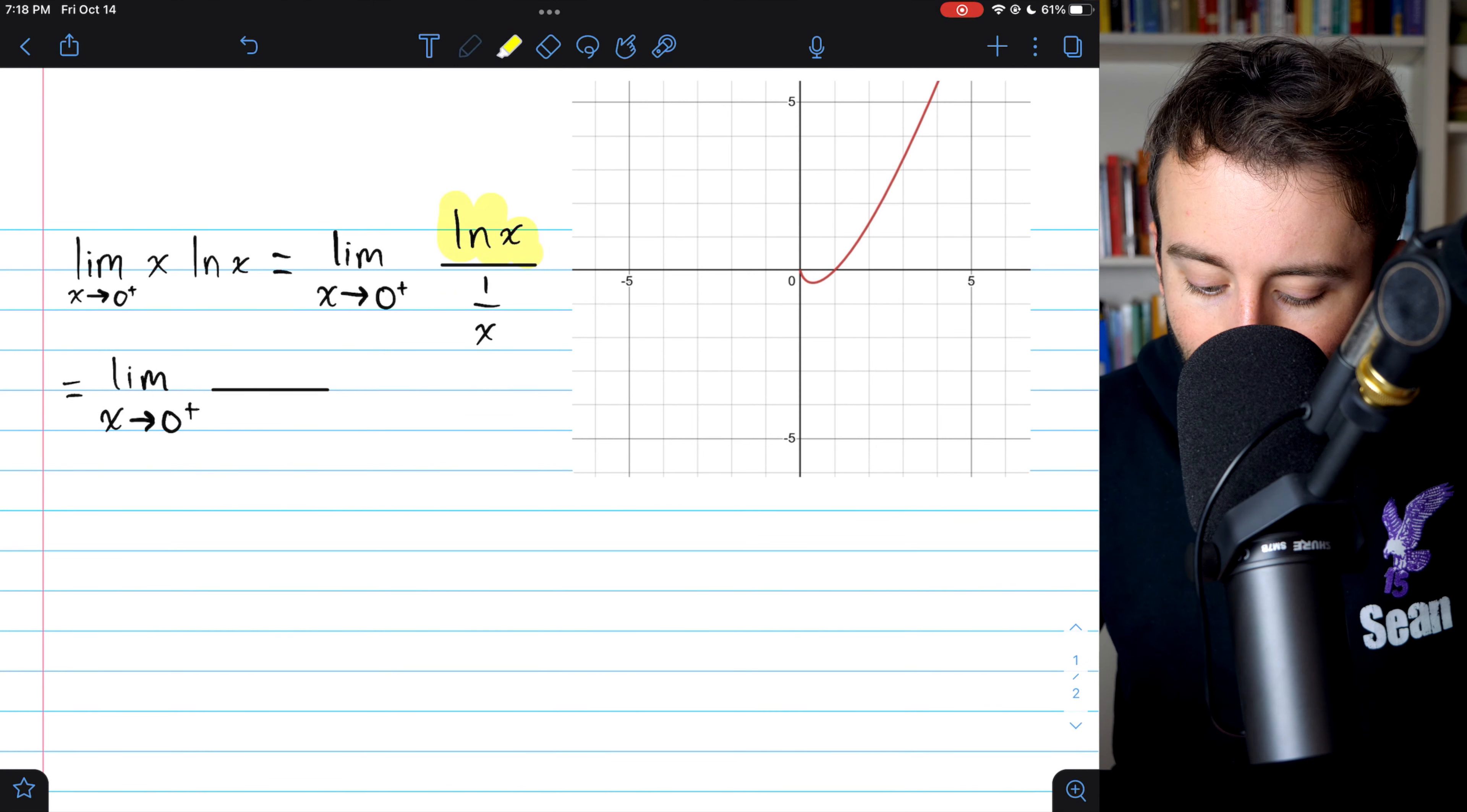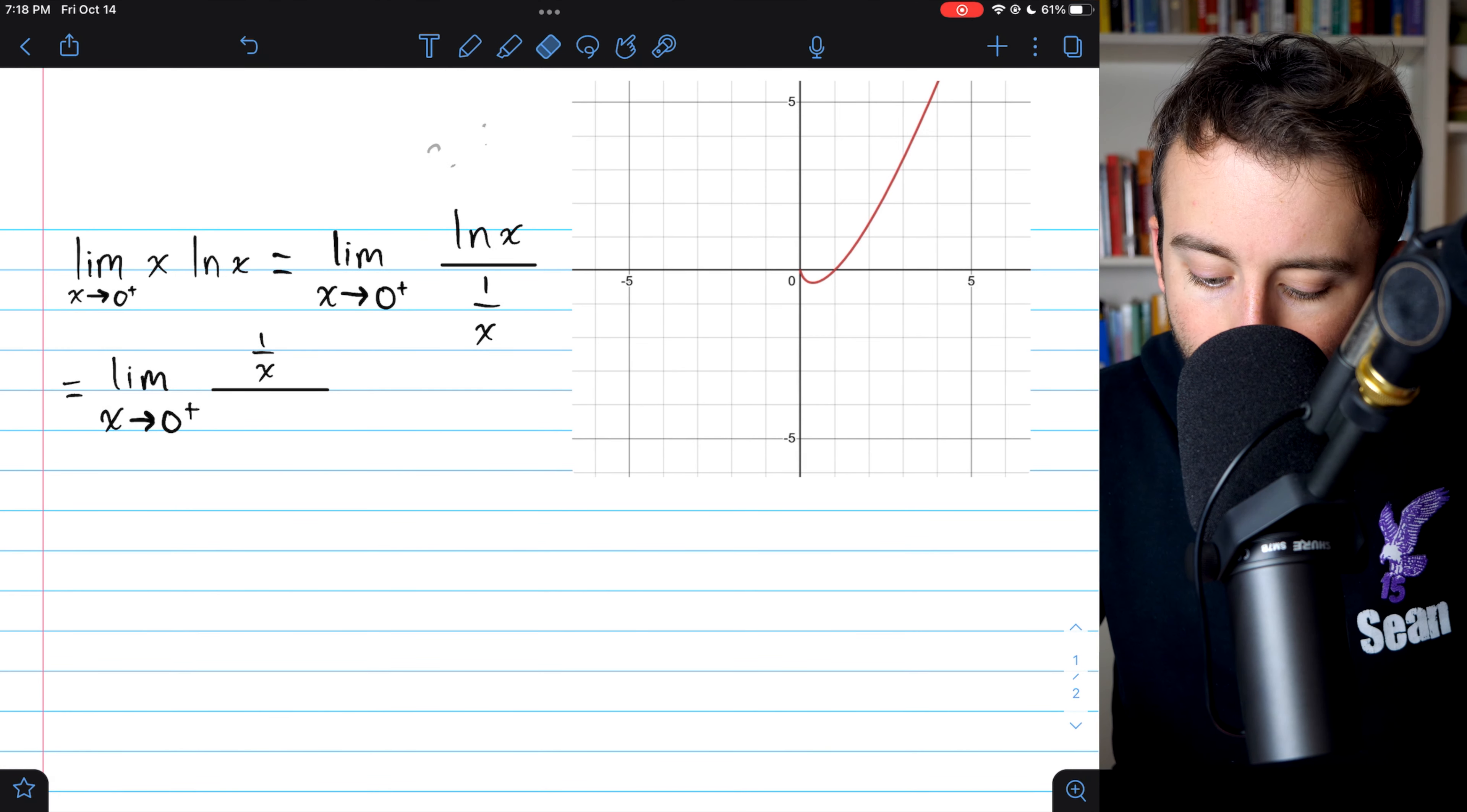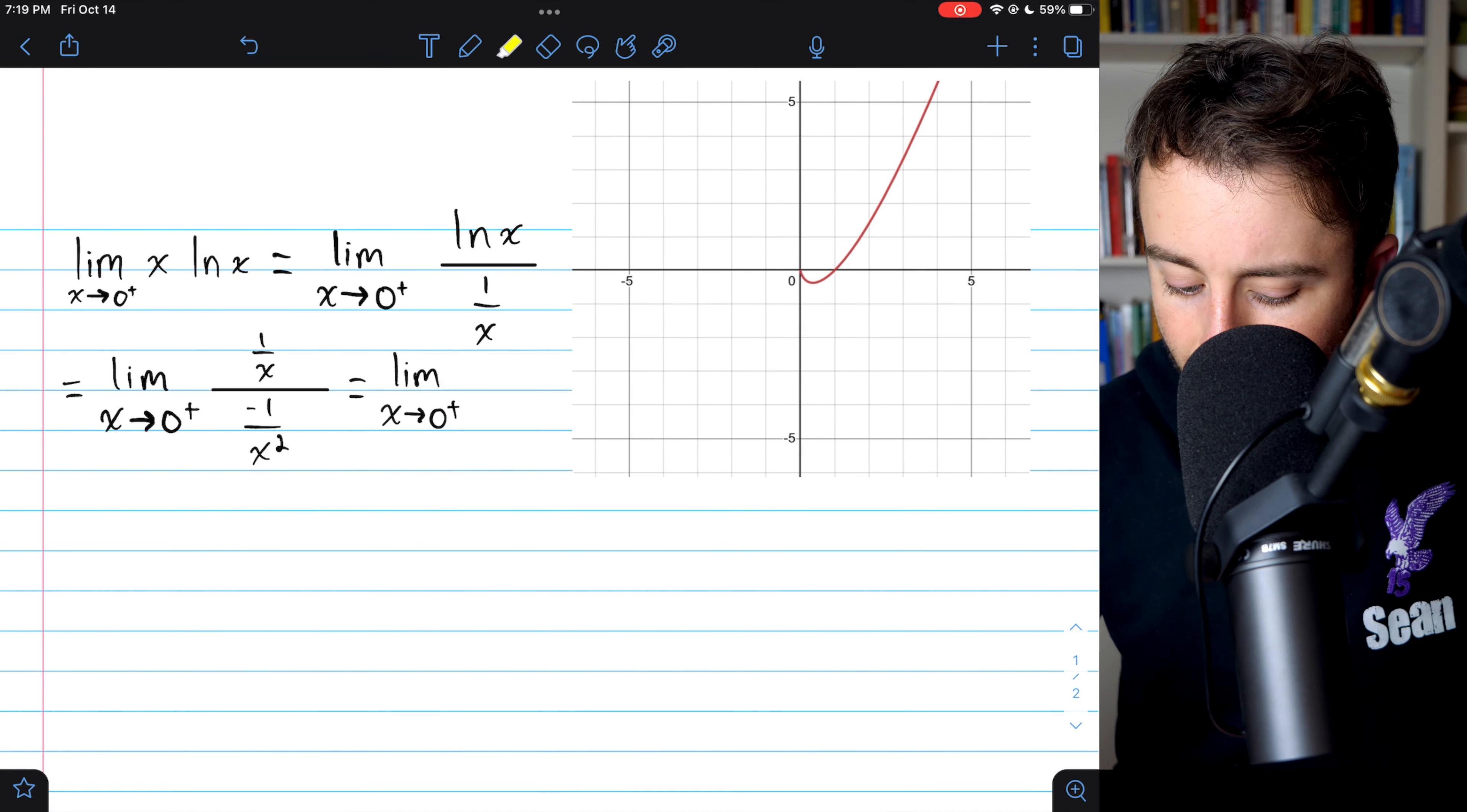The derivative of ln(x) is just one over x. That's not so bad. And the derivative of one over x, that's just a power rule on x to the negative one. And so that's going to be negative one divided by x squared.